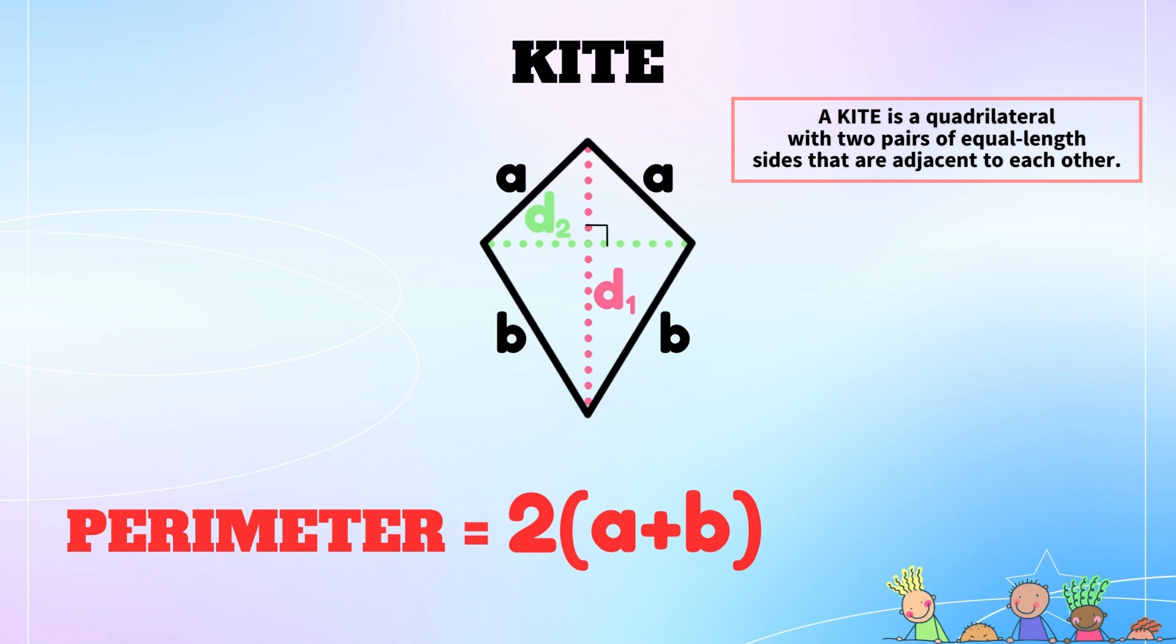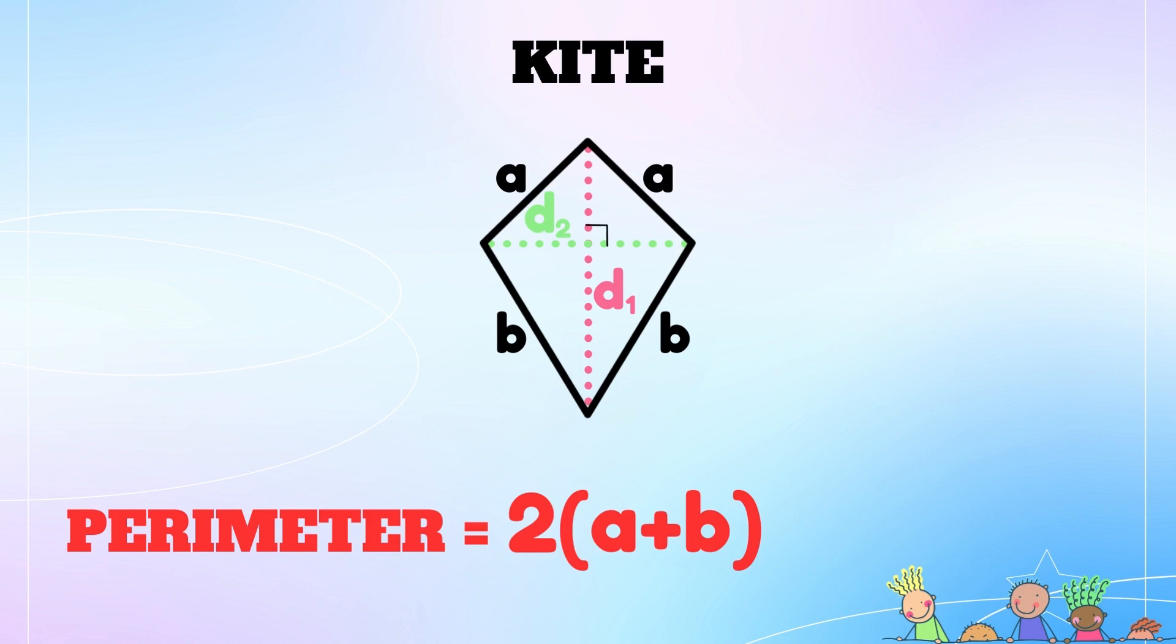A kite shape is a quadrilateral in which two pairs of adjacent sides are of equal length. It has two diagonals that always intersect each other at 90-degree angles. A kite is symmetrical about its longer diagonal. The shorter diagonal divides the kite into two isosceles triangles. The formula for the perimeter of a kite is again the same as that of a rectangle, so 2 times a plus b in parentheses.